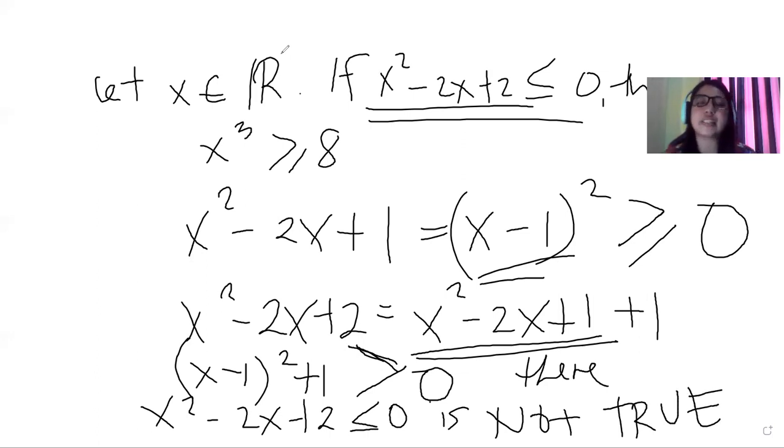Which means, even if we're not going to prove that x³ is greater than or equal to 8 anymore, because our statement x² - 2x + 2 is already false. So there's no use anymore to prove that x³ is greater than or equal to 8. This is, as mentioned in our introduction, an example of a vacuous proof.